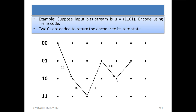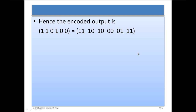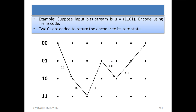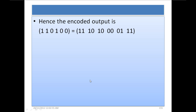Here if we are at 10 and the next input bit is 0 — this is the added zero, since we said we are going to add two zeros to return the encoder to its zero state. When we add this zero at this stage, the next state of registers is 01 and output is 01. Then from this state it goes to 00. As you can see it has come back to the 00 state and the output value is 11. So the full encoded output is: 11 10 10 00 01 11.